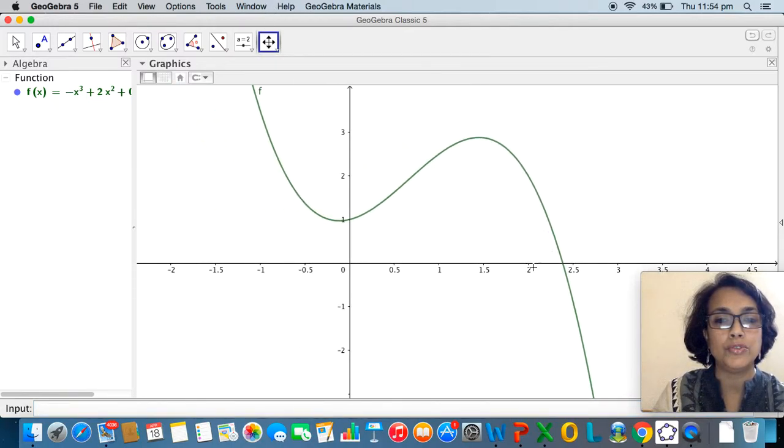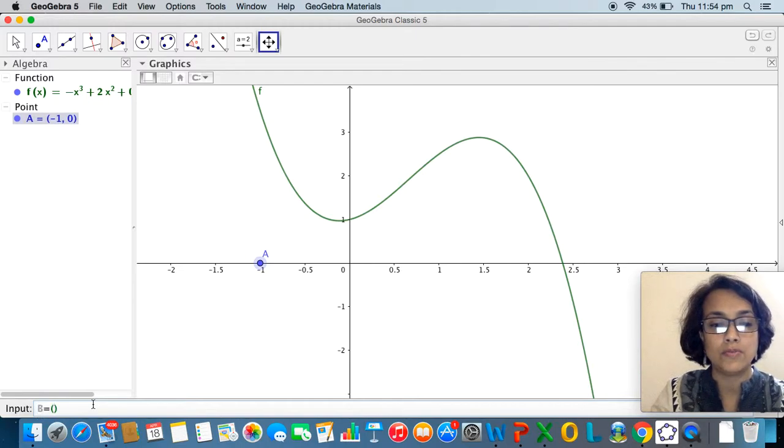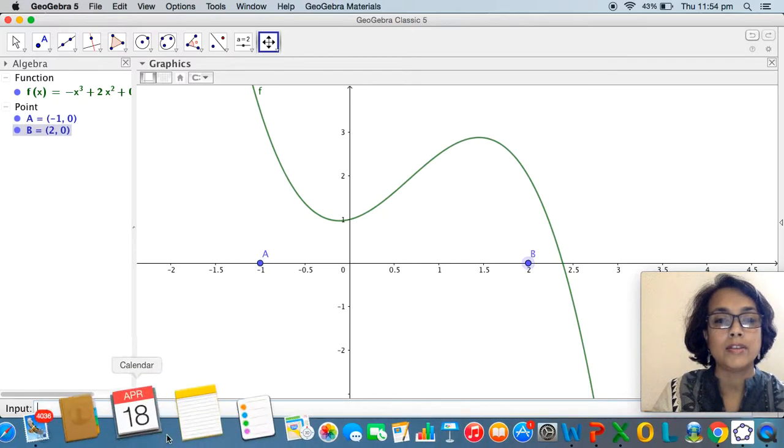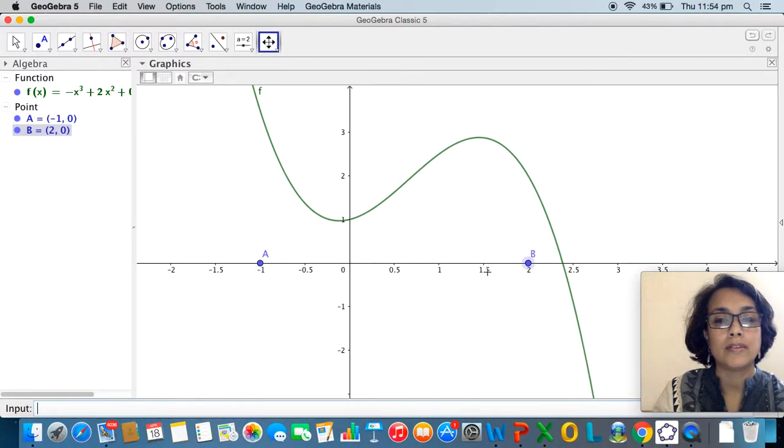I'm going to enter two points, capital A which has coordinates minus 1 comma 0 and point B whose coordinates are 2 comma 0. So this marks the points between which I would like to explore the area under this curve.